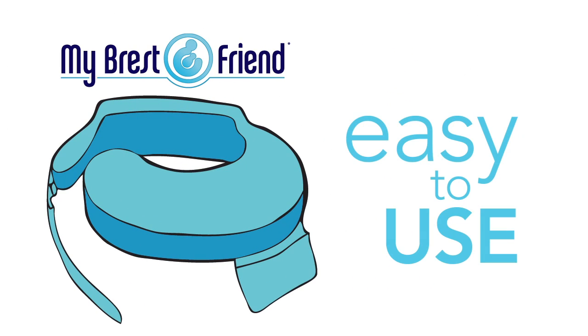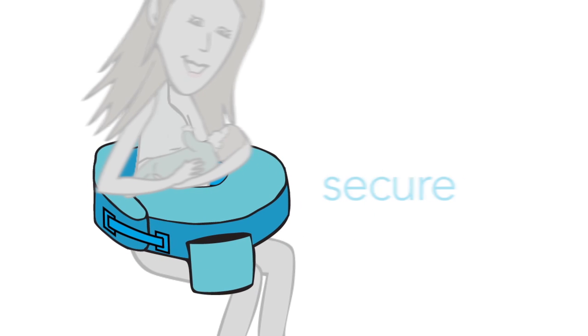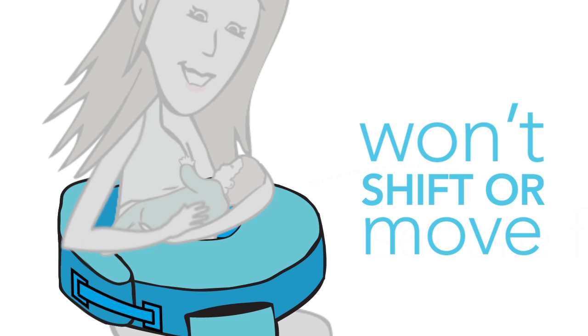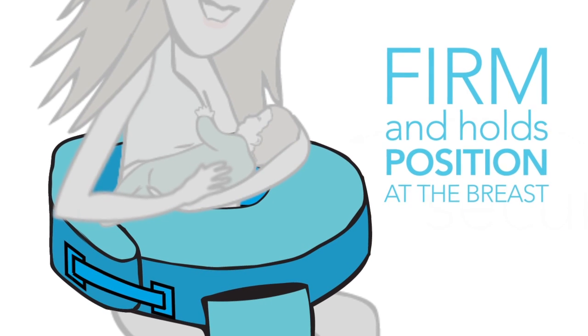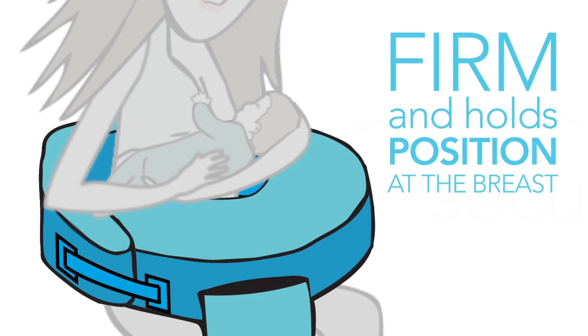My Breast Friend is easy to use. It simply fits all the way around mom's body, secures, and stays naturally in place. Unlike other pillows, it doesn't shift or move. The My Breast Friend is firm and holds its position at the breast, facilitating proper latch and positioning.